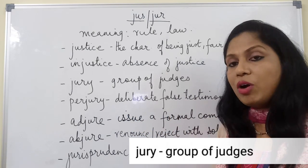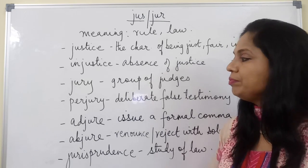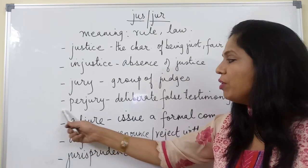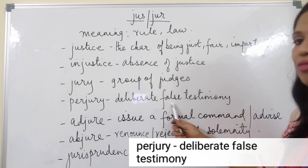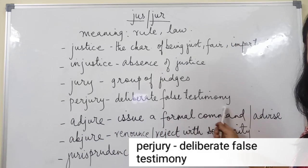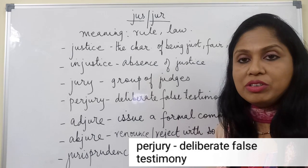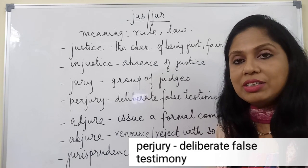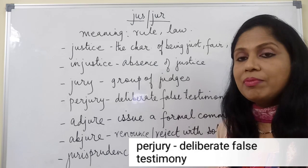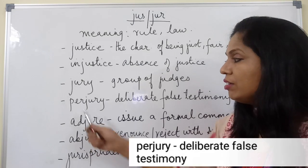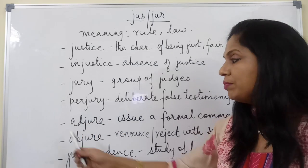A jury could be for a competition or for solving a legal matter. Perjury is a deliberate act of false testimony — when a person, especially a witness, deliberately tells lies, that act is called perjury.